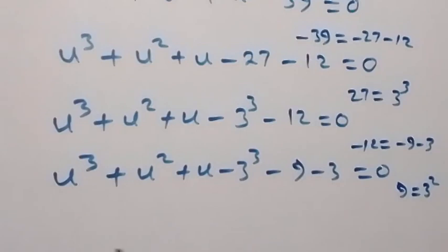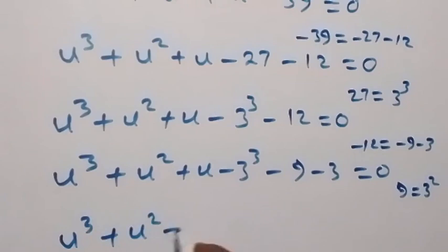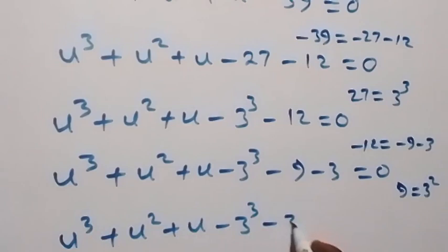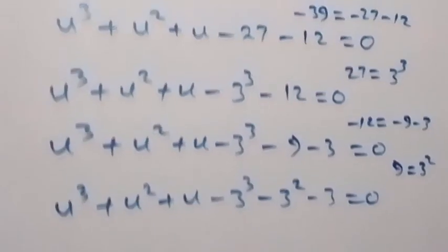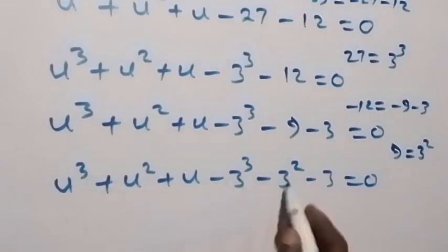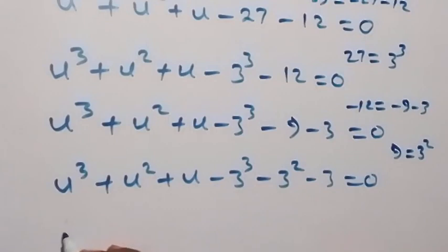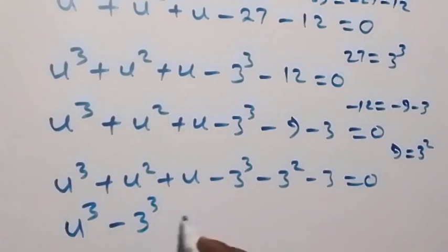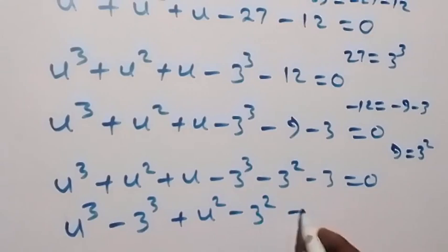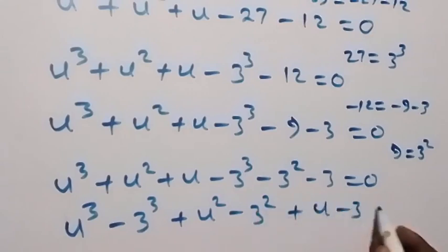Now let's group the terms together by their powers. We have u raised to power 3 minus 3 raised to power 3, plus u squared minus 3 squared, then plus u minus 3 equals zero.